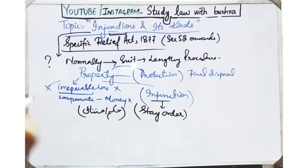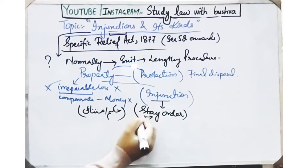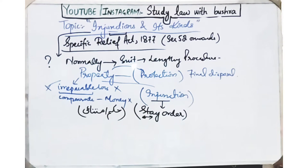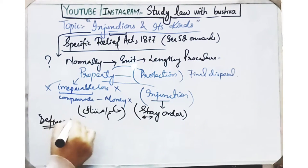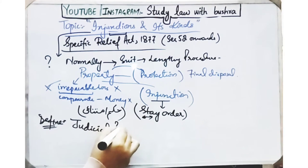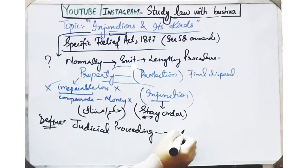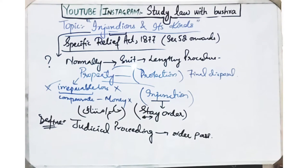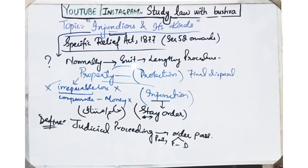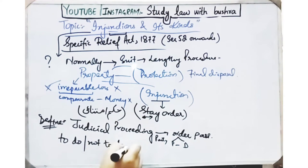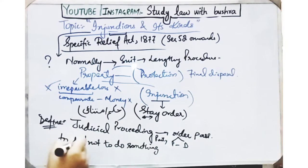You must have often seen that whenever injunctions are discussed, the first word that comes to mind is 'stay order'. We also call it stay order, which is called in Urdu 'hukm-e-imtina'i' — meaning the court issues an order to stop the other person, to prevent and prohibit them. So if we define injunction simply: injunction is any judicial proceeding whereby an order is passed and given to any party for doing or not doing any act.